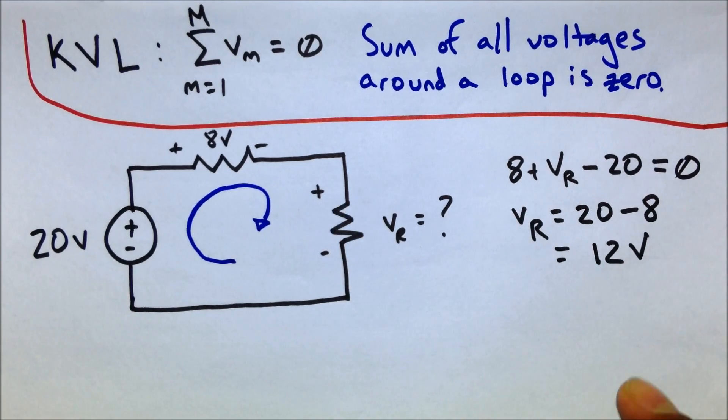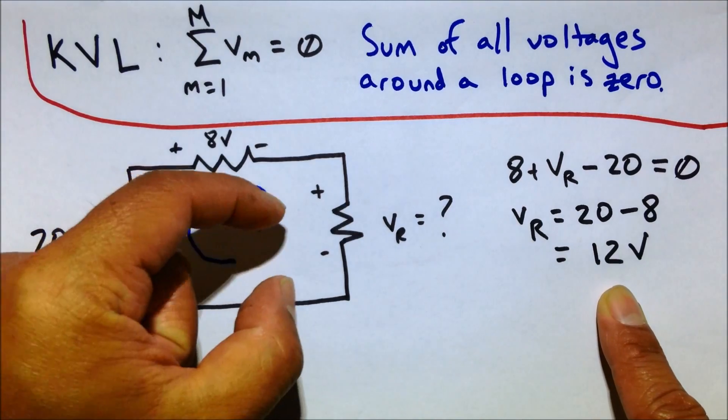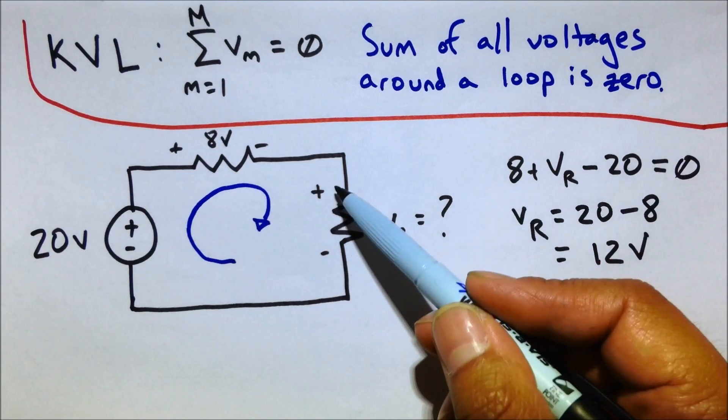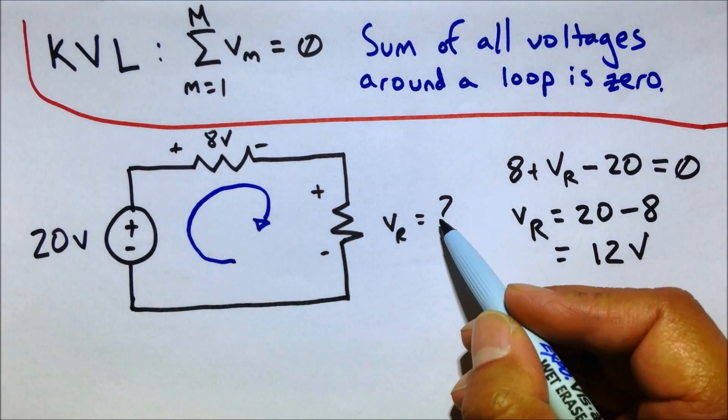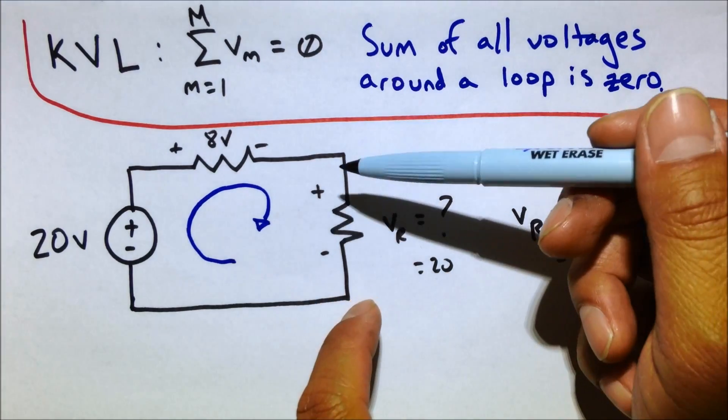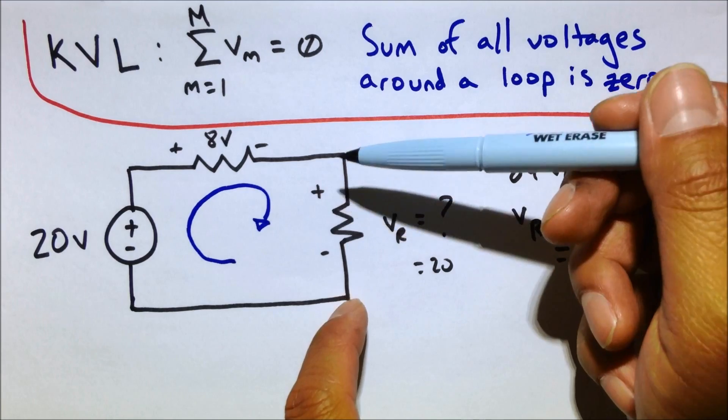Now, what does it mean that it's a positive voltage? Well, it means that the way we labeled this was just fine. That the drop really is from here to here. The potential is from here to here. So this really is 12 volts across here. If you took an ohmmeter, measured it from here to here, the drop is 12 volts.